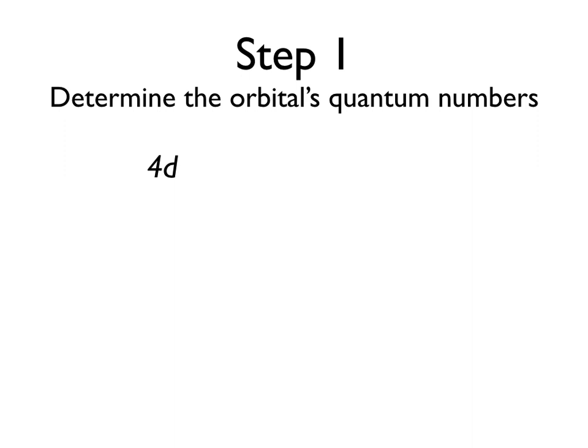So if we look at 4d, we can immediately get two very important pieces of information. First off, that 4 tells us our principal quantum number, or n, which in this case is 4. No big surprise there.